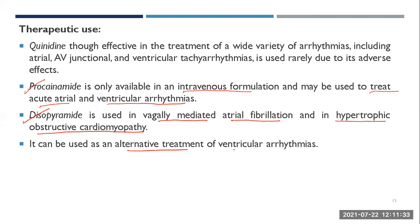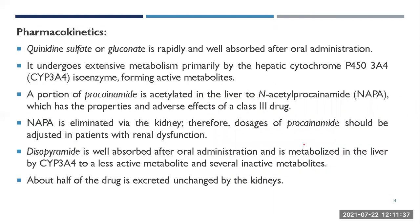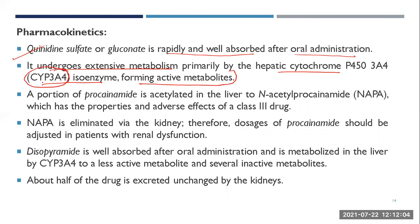Pharmacokinetics: quinidine sulfate or gluconate is rapidly and well absorbed after oral administration. It undergoes extensive metabolism primarily by the hepatic CYP450 3A4 isoenzyme, forming active metabolites. Procainamide is acetylated — a phase 2 reaction — to N-acetyl procainamide (NAPA), which has properties and adverse effects of a Class 3 drug. NAPA is eliminated via the kidneys.